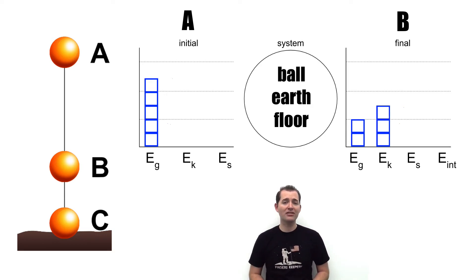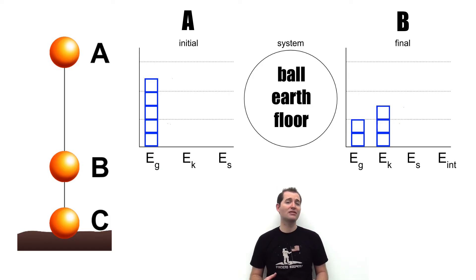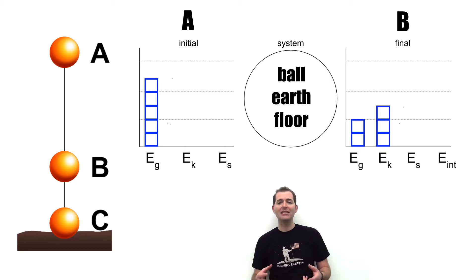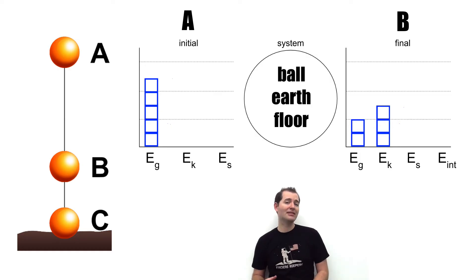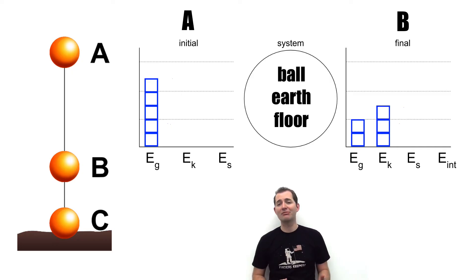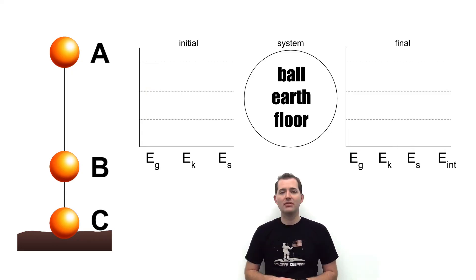There is no internal energy because there is no sound or vibration taking place. As we can see, the total amount of energy — five units — that was present at the initial point is still present at the final point, even though some of that energy has been transferred from gravitational potential energy into kinetic energy.